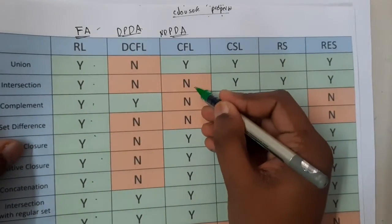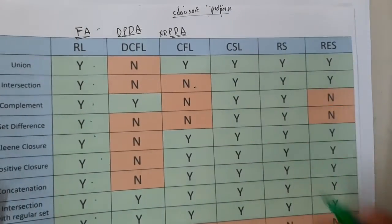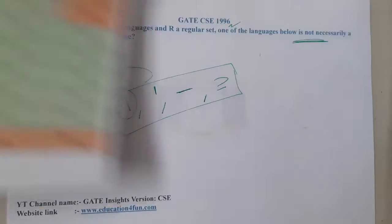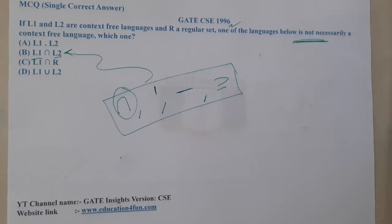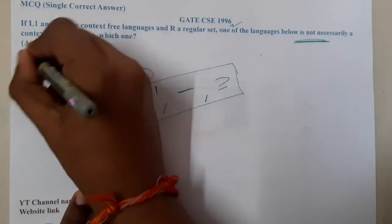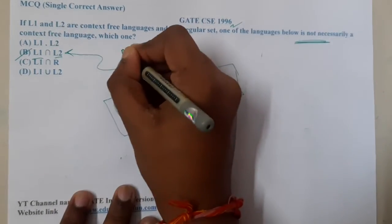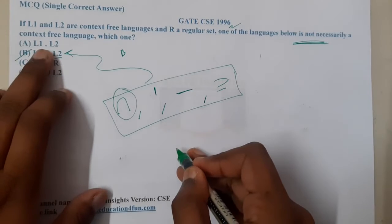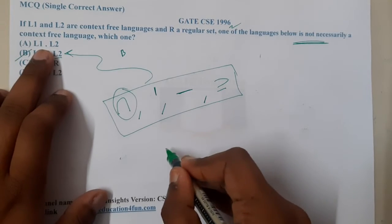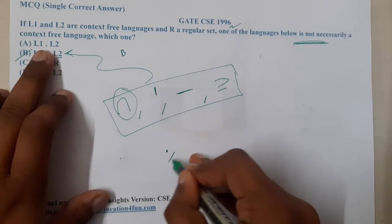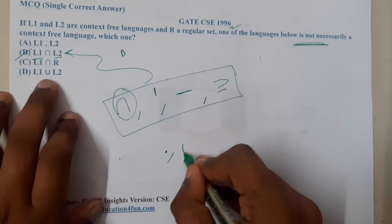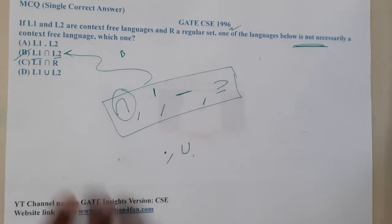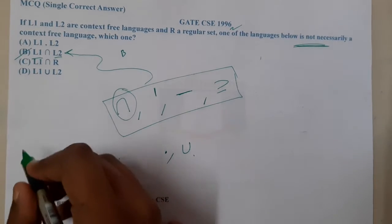As you can see in the table, the result is 'not', meaning you cannot guarantee whether it will be context-free or not. That is why B is the most appropriate correct answer. Context-free languages are closed under concatenation and closed under union.